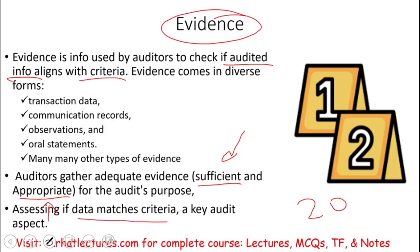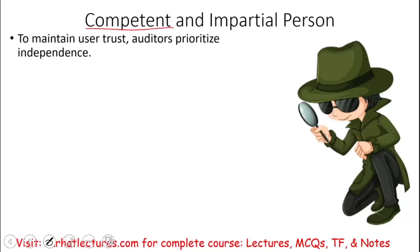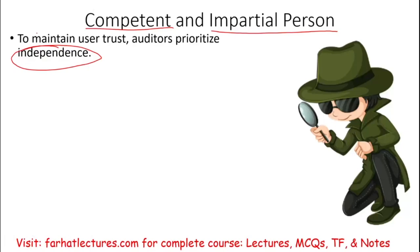Not anyone can collect evidence — you have to have an auditor who is competent and, most importantly, impartial. Impartial means independent. To maintain users' trust, the auditor must prioritize independence. If the auditor is not independent, the audit is useless, because you cannot trust the outcome. The reason for the audit is to give you an opinion about something, and if the person giving that opinion is not independent, it's worthless.